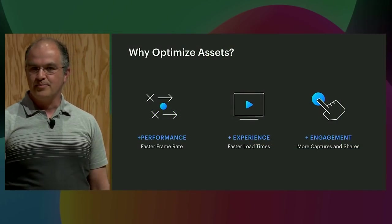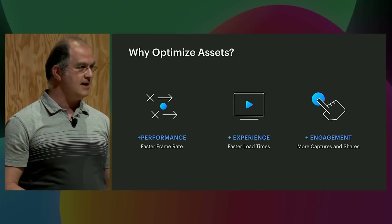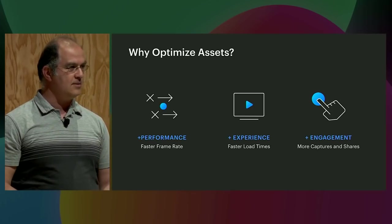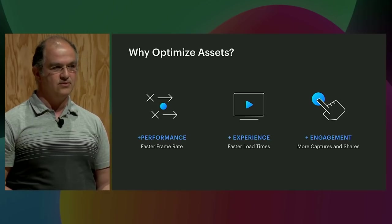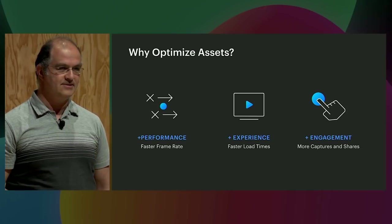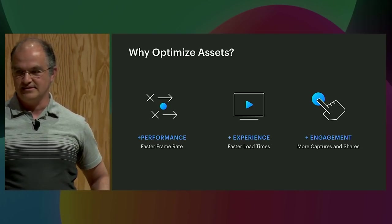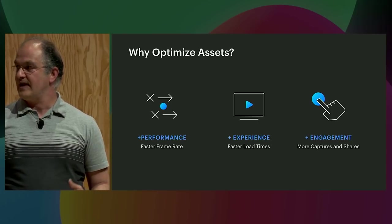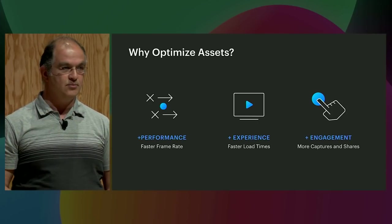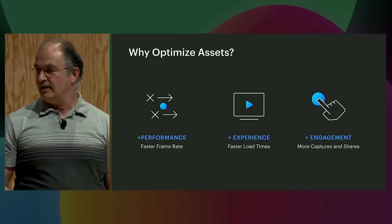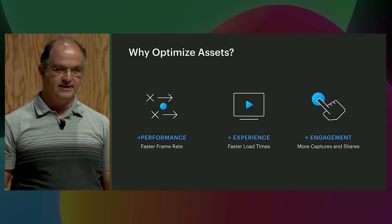Why is it important that we optimize assets? By having a more optimal asset, your effects will basically be more fluid, they will render faster, they will be more interactive. Generally, it will provide a better user experience. They will load faster, which means your users will be able to see your effects sooner, or more likely to see it at all. And overall, it increases the user's engagement with your effect.